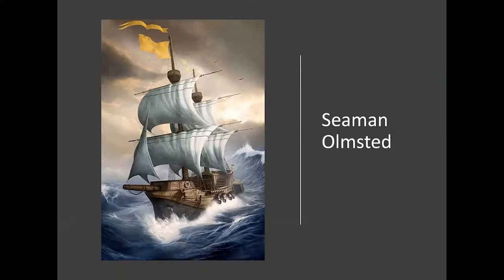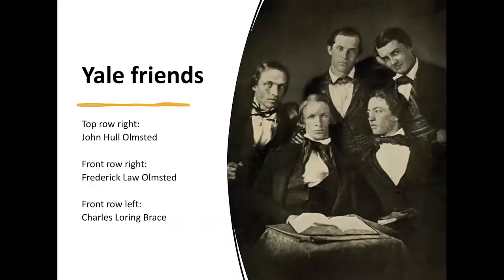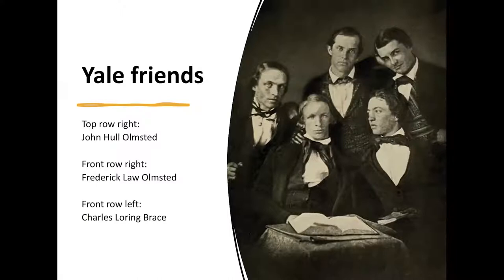Young Frederick attended several boarding schools in Connecticut, but had to abandon plans for college due to weak eyesight. He briefly worked for a New York City dry goods importing firm, but the young man was captured by the romance of life at sea. In 1843, he set out for China as an apprentice seaman — a rather harrowing experience. He attended lectures at Yale including on scientific agriculture and chemistry. His friend Charles Loring Brace would go on to become one of the leading social reformers of the late 19th century, a founder of the Children's Aid Society in New York City.